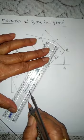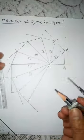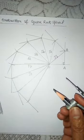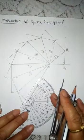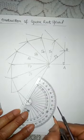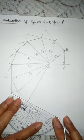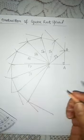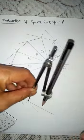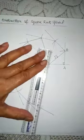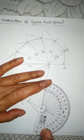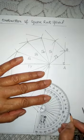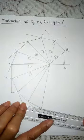Can we get more than under root 17? No — you will come to know when we draw under root 17. Now again we will draw 90 degree, and cut 1 inch. Join it with O. Again on this line you have to make 90 degree.